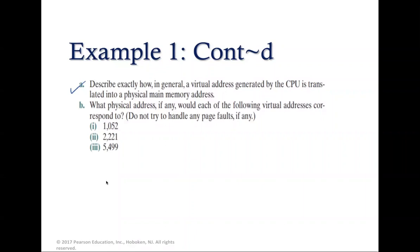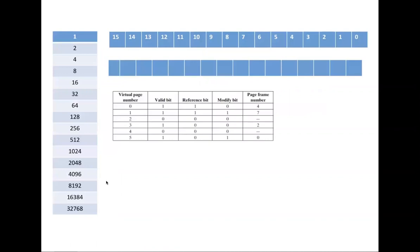For the second part, we find the physical address for three given virtual addresses in decimal. If given in decimal, your answer should also be in decimal unless stated otherwise. If there is a page fault, just state that a page fault is generated. We have three virtual addresses to translate using the virtual paging scheme.